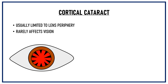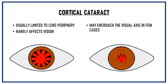In few cases, cortical cataract may encroach the visual axis and can cause glare and affect contrast. The first site of appearance of a cortical cataract is usually the inferonasal quadrant, because it is most exposed to UV radiations.